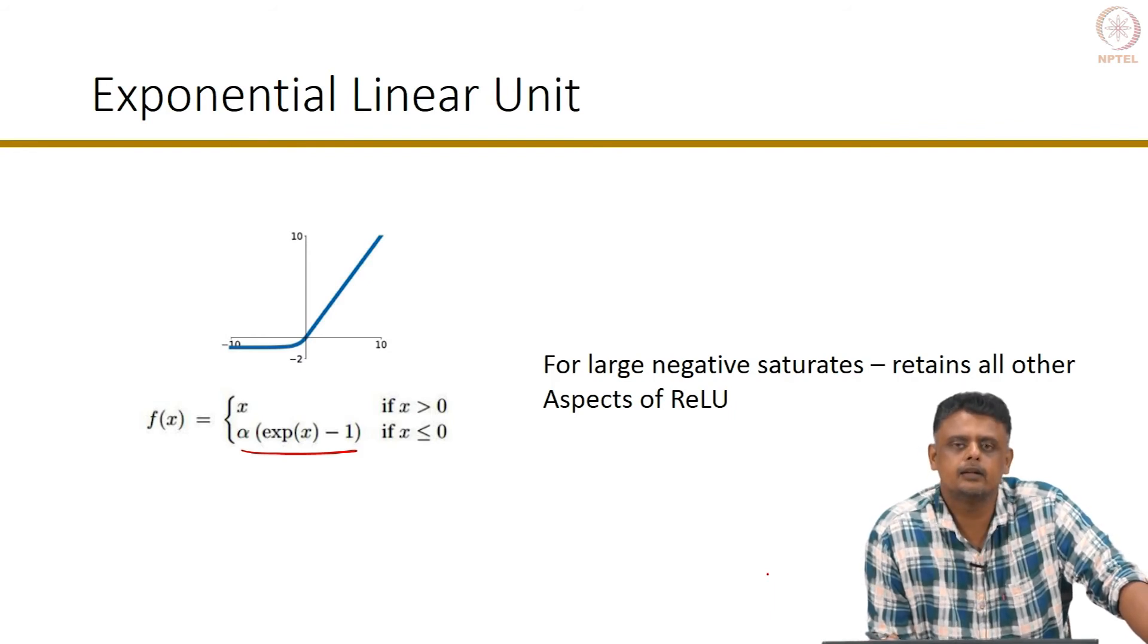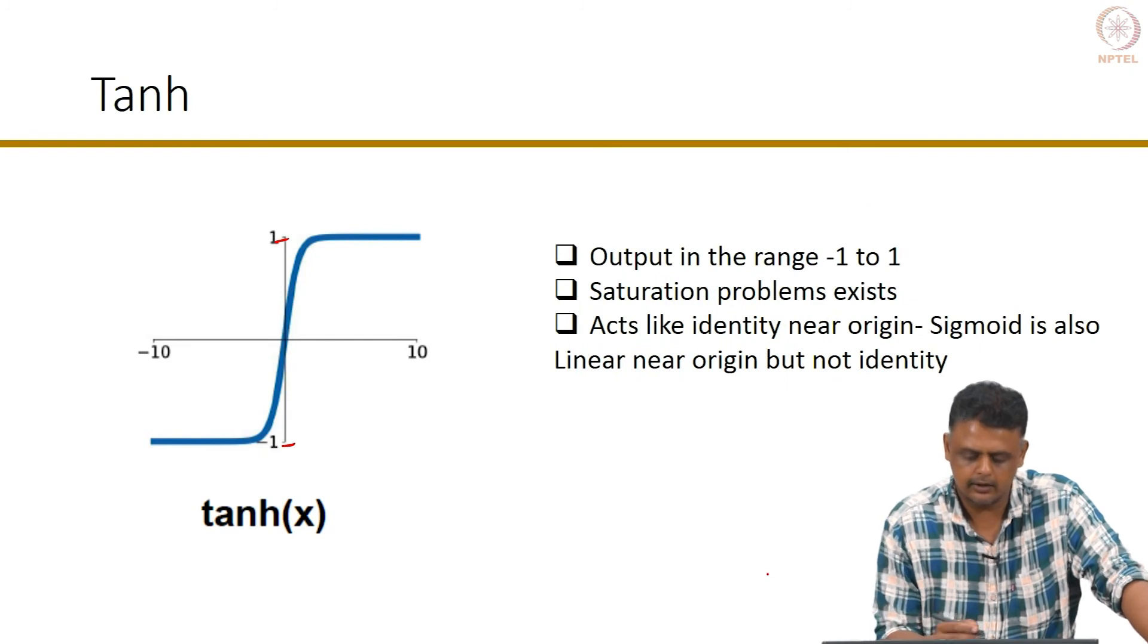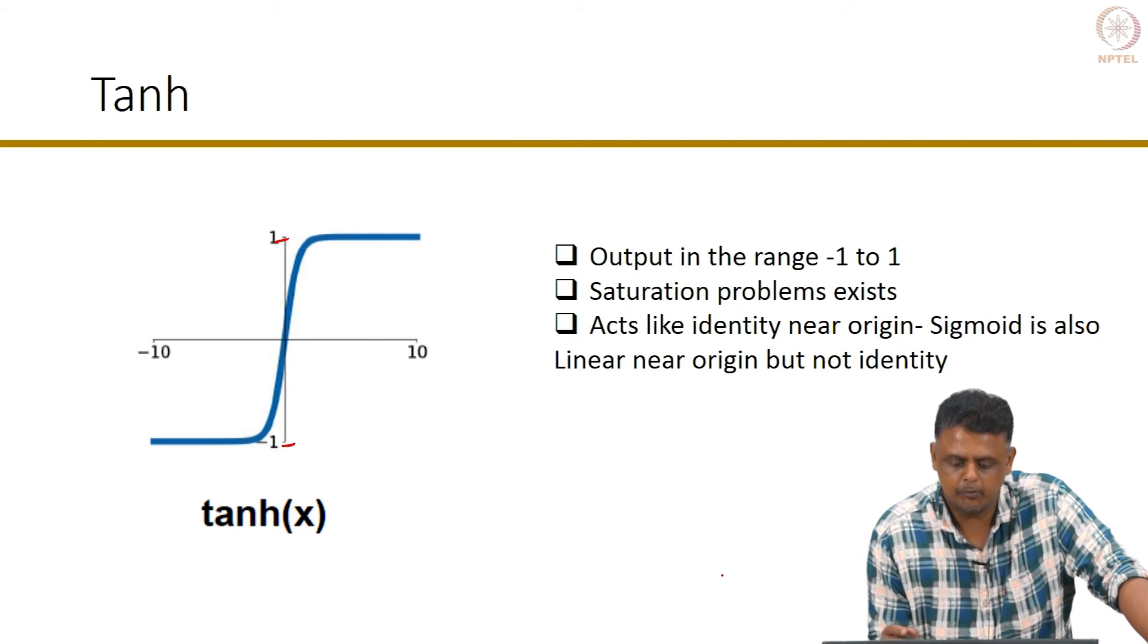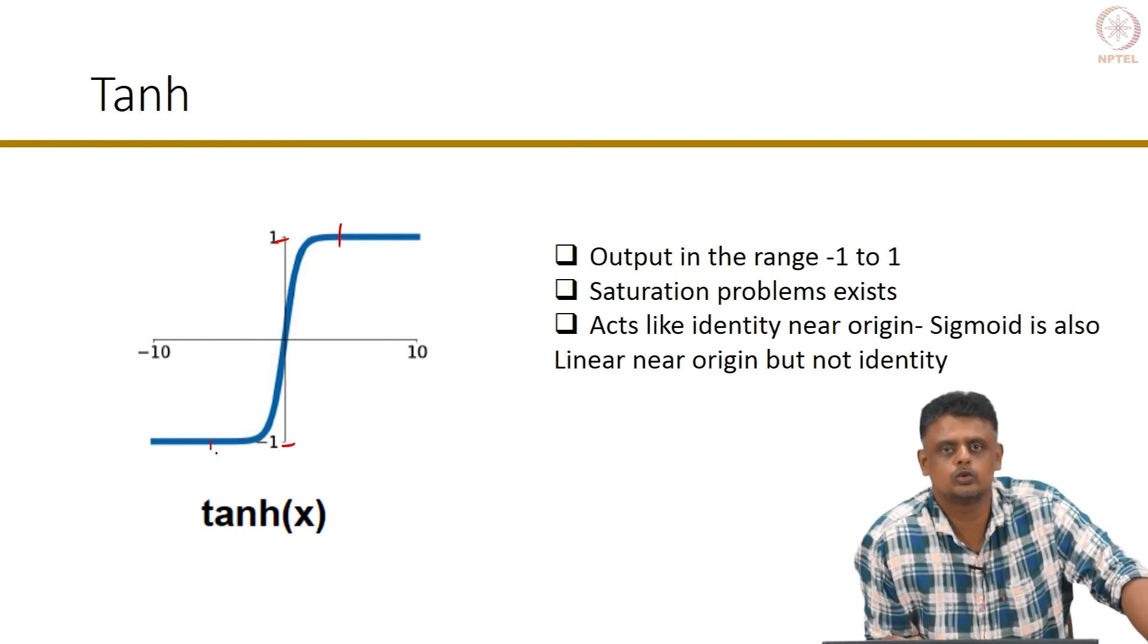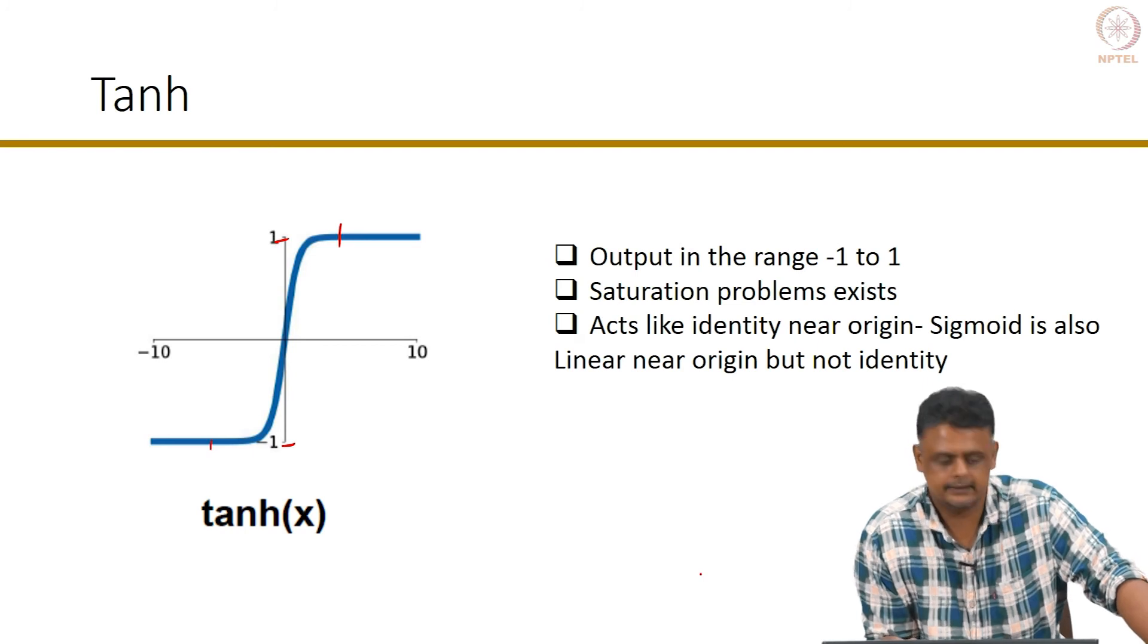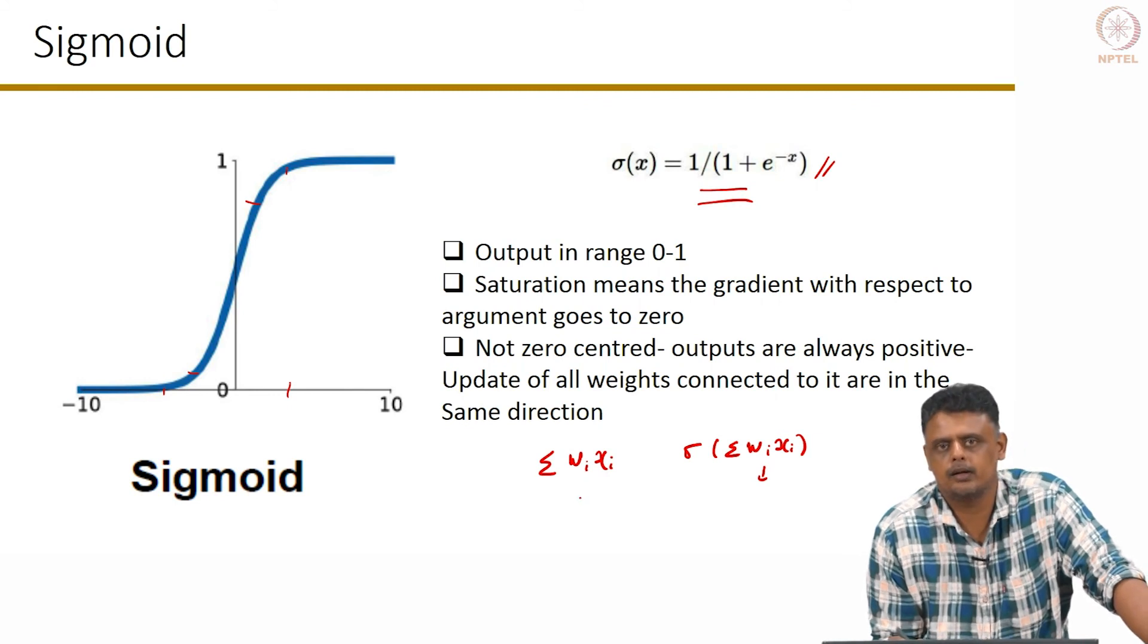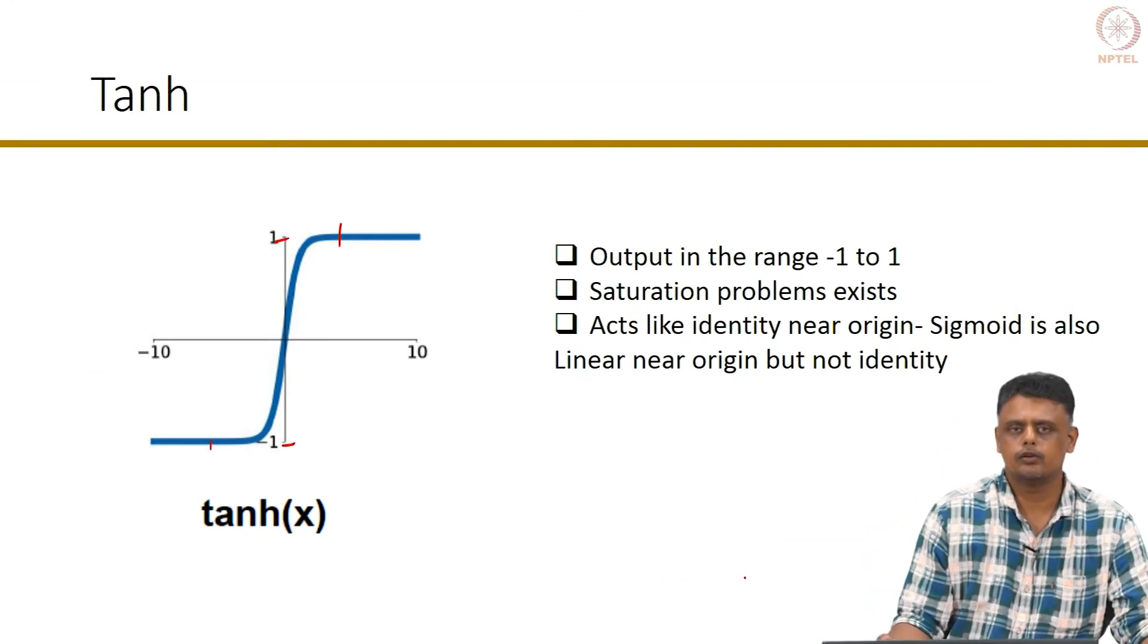These are the typical activation functions that are used in a network. I have not shown here the actual analytical form of tan hyperbolic x; you can look that up and convince yourself that the plot looks this way. The problems with sigmoid and tanh are basically the saturation. On the other hand, they are very convenient in the sense that the outputs are squashed between minus 1 to 1 or 0 to 1. For sigmoid it is 0 to 1, so if you want the output layer to be interpreted as a probability score, then something like a sigmoid function would be an appropriate non-linearity at the output layer.